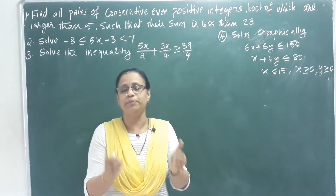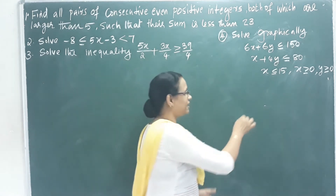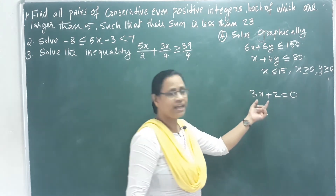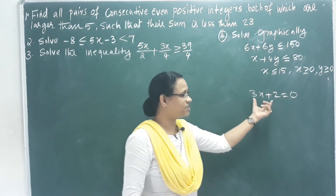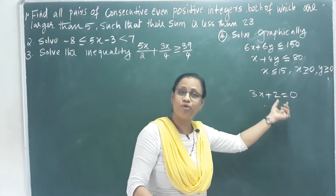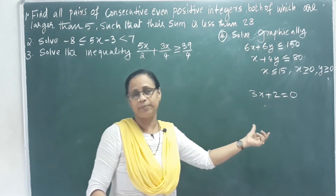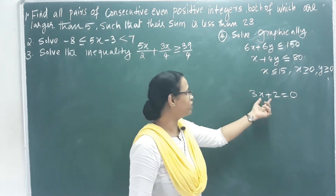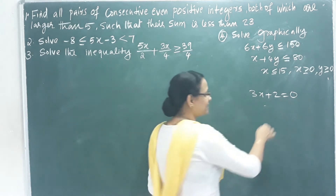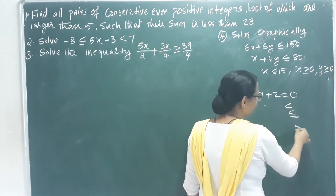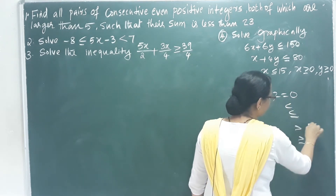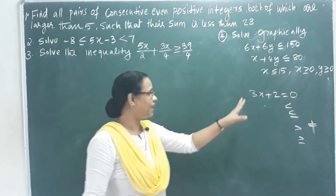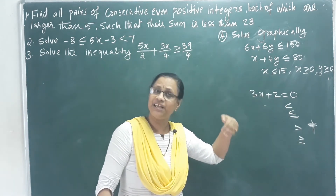Now, in an algebraic expression, 3x plus 2 is equal to 0. In this expression, when we use an equal sign it is called an Equation. In an algebraic expression, when we use less than, less than or equal to, greater than, greater than or equal to, or not equal to — that is called a Linear Inequation.